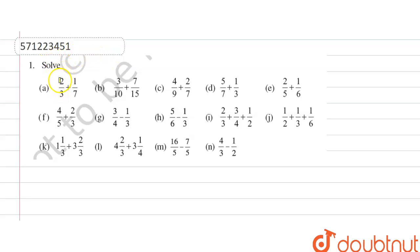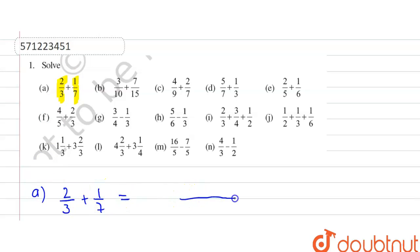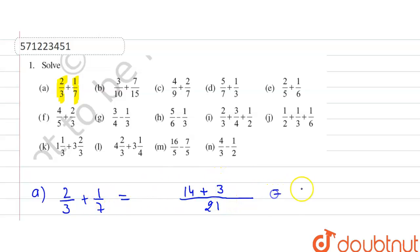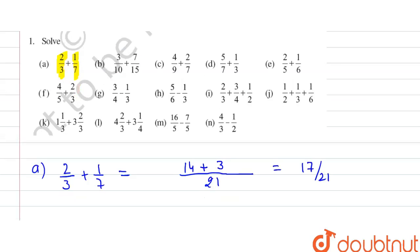We have to solve the addition problem. The first part is 2/3 + 1/7. Take the LCM of 3 and 7, which is 21. So 7 × 2 = 14, and 3 × 1 = 3. Adding gives 17/21. This is the equivalent fraction for the sum of both fractions.